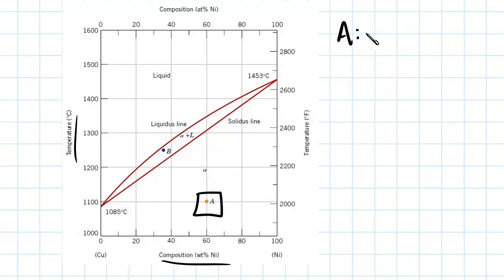So A, again, the temperature equals 1100 degrees Celsius. And we know that CO equals 60%. We also know in this situation that it's just made up of solid, no liquid.